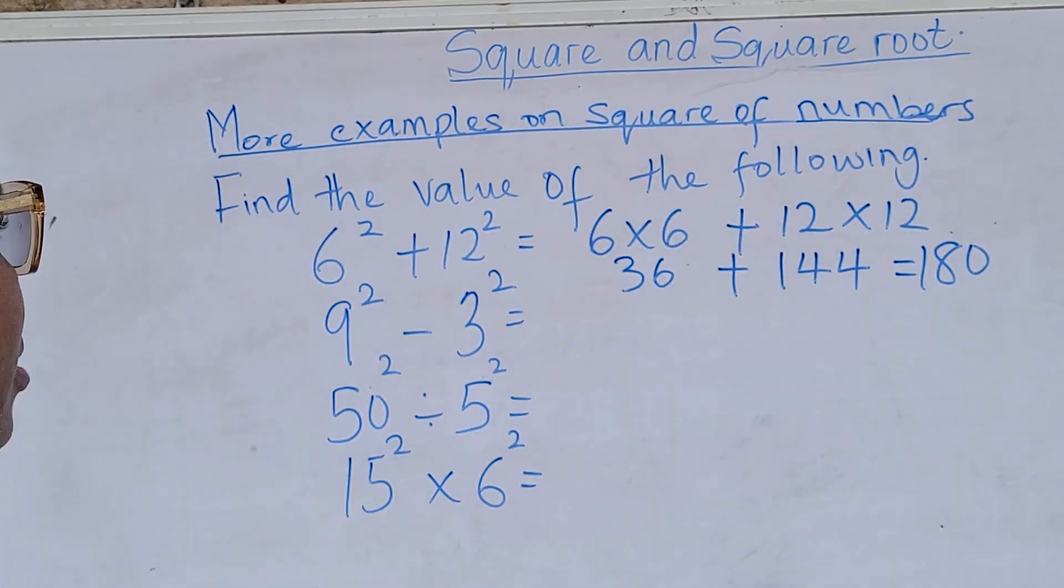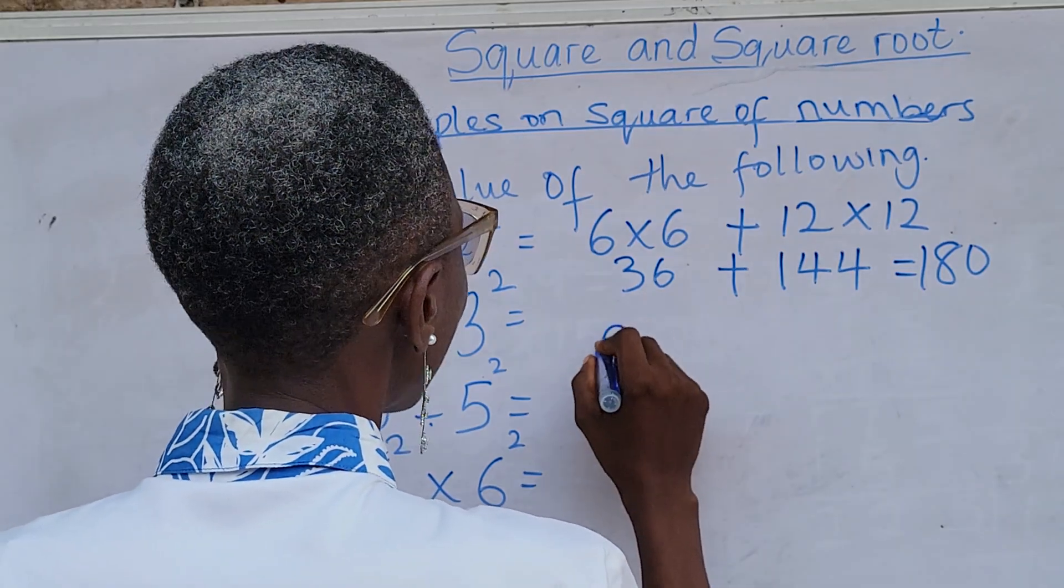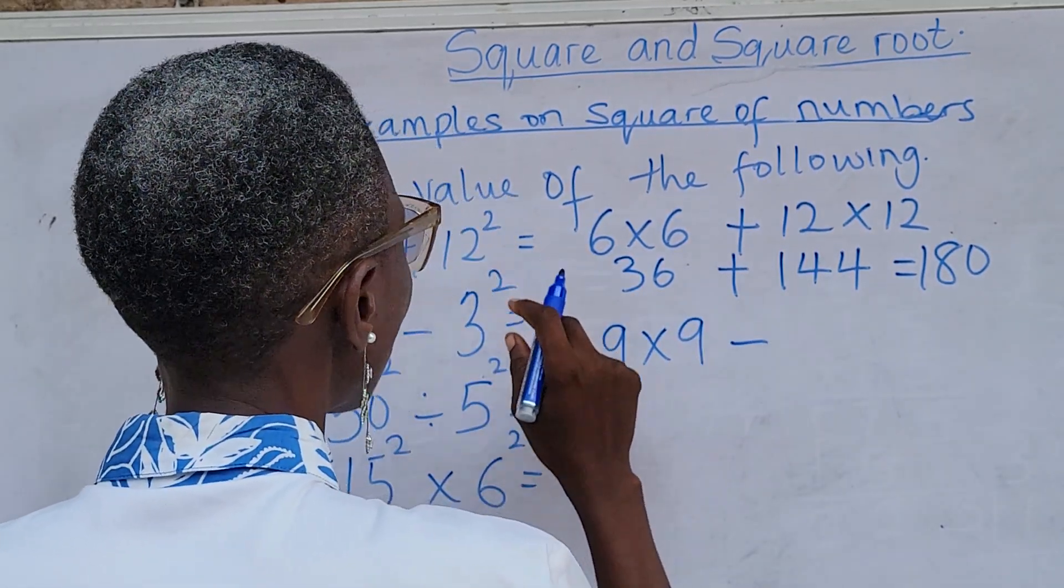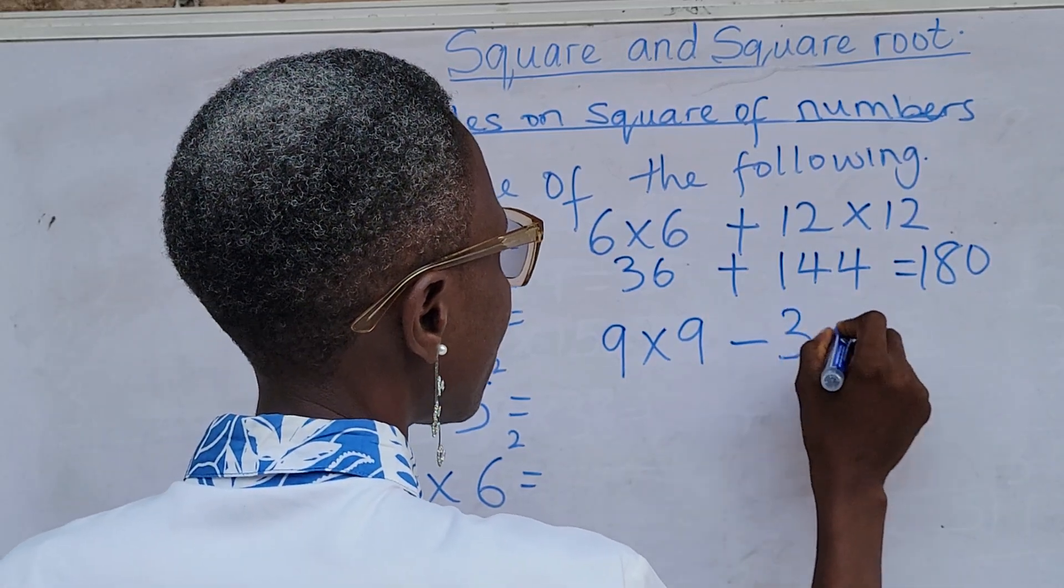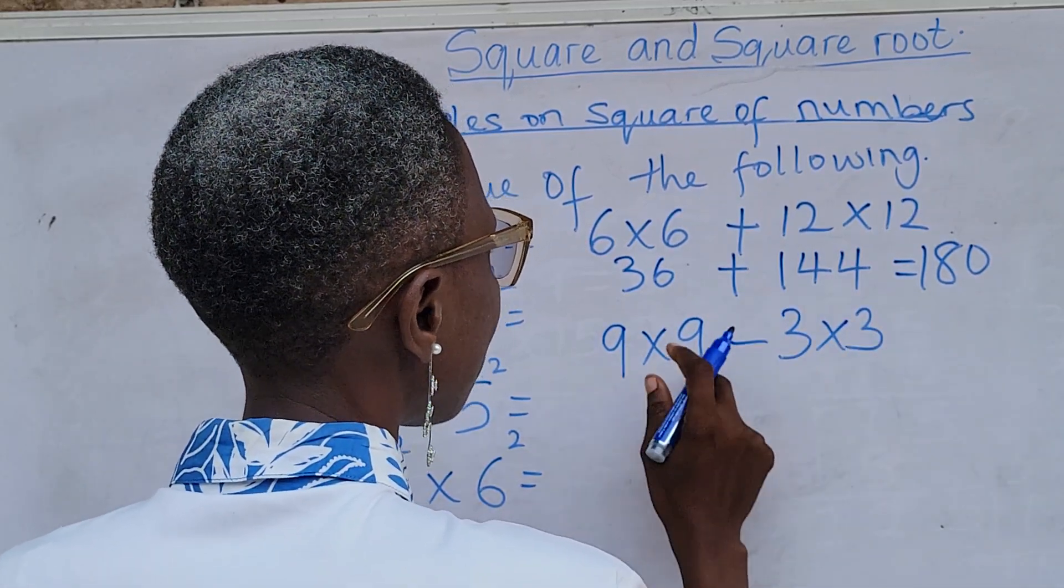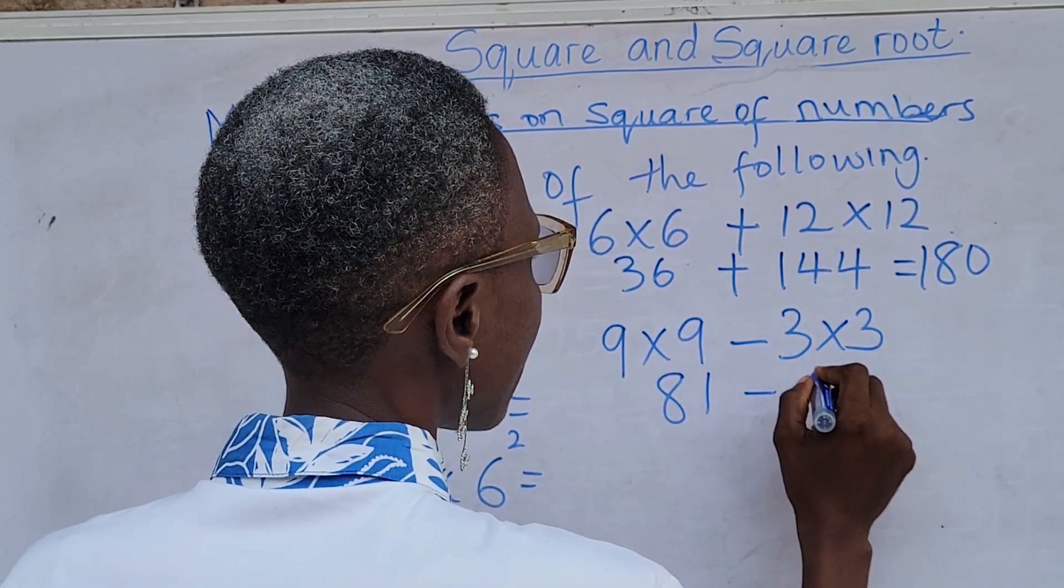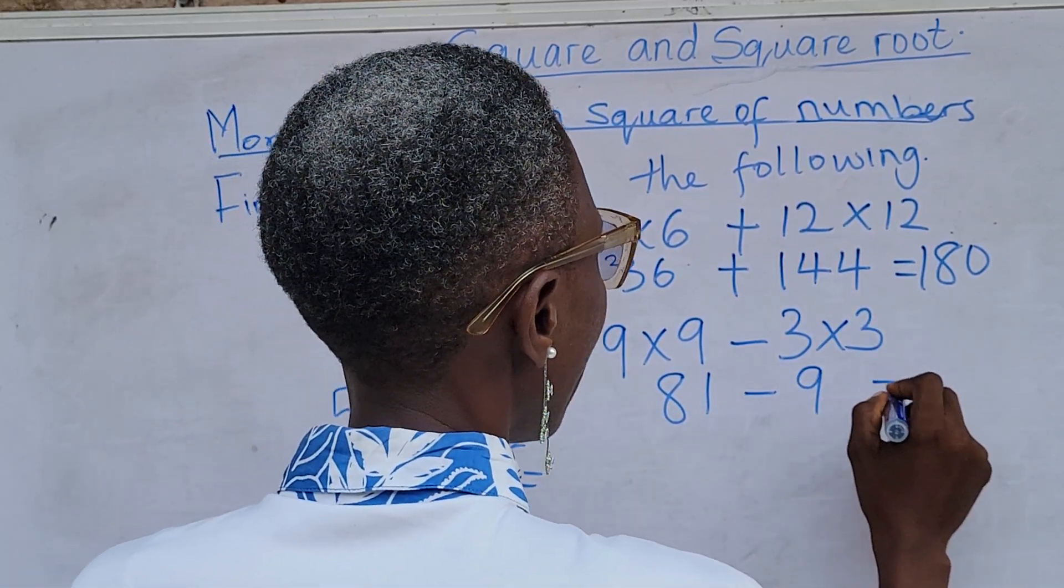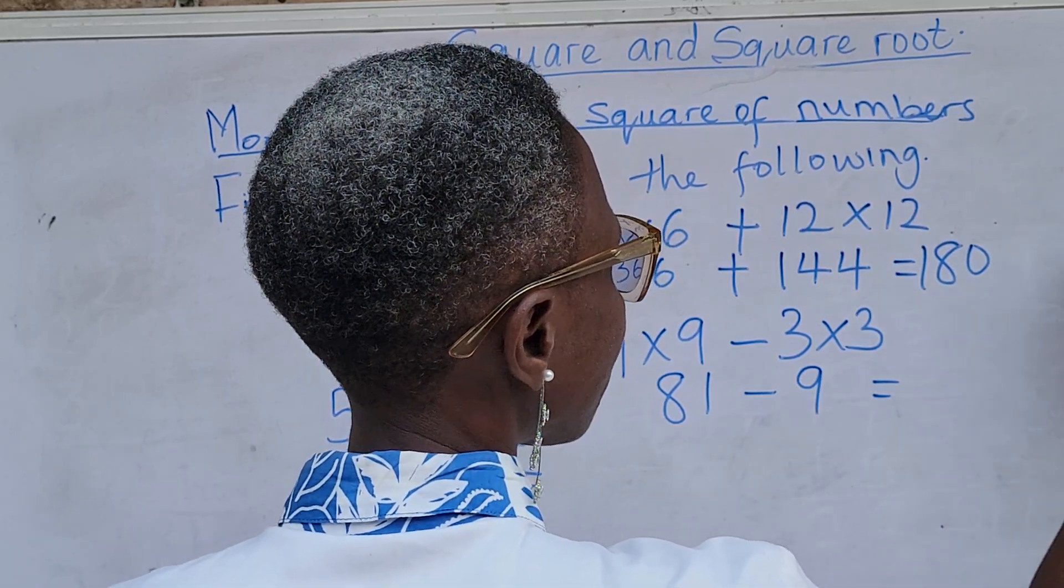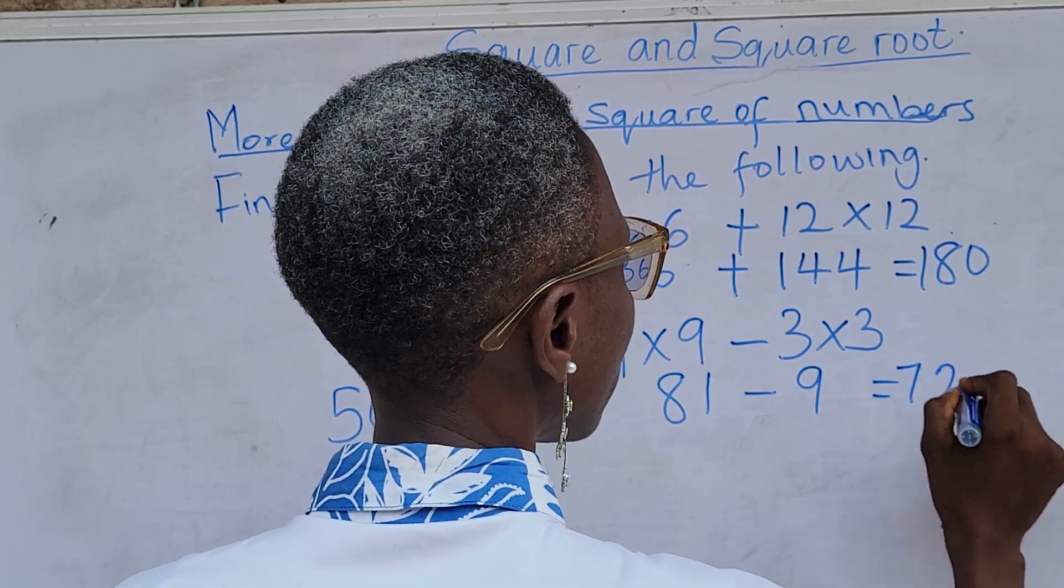Then, the second question says 9 raised to the power of 2 which is 9 times 9 minus 3 raised to the power of 2 which is 3 times 3. Now, we are having 9 times 9, 81 minus 3 times 3, that's 9. So, 81 minus 9, that's 72.